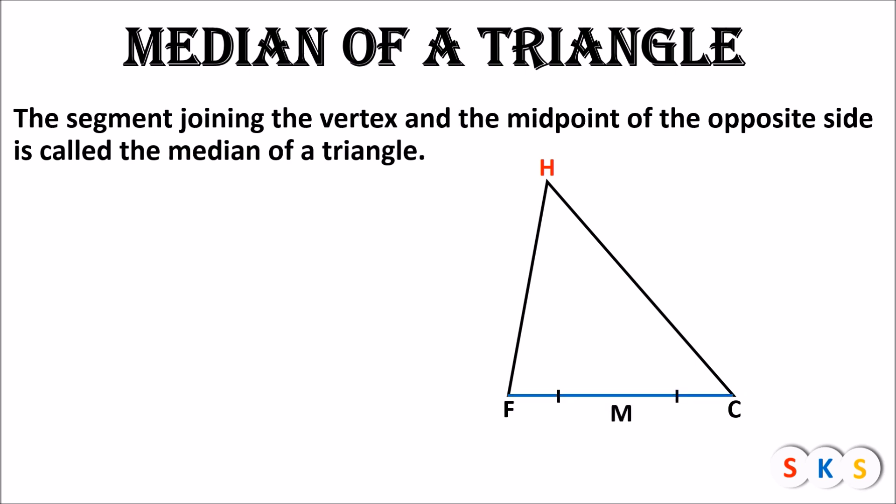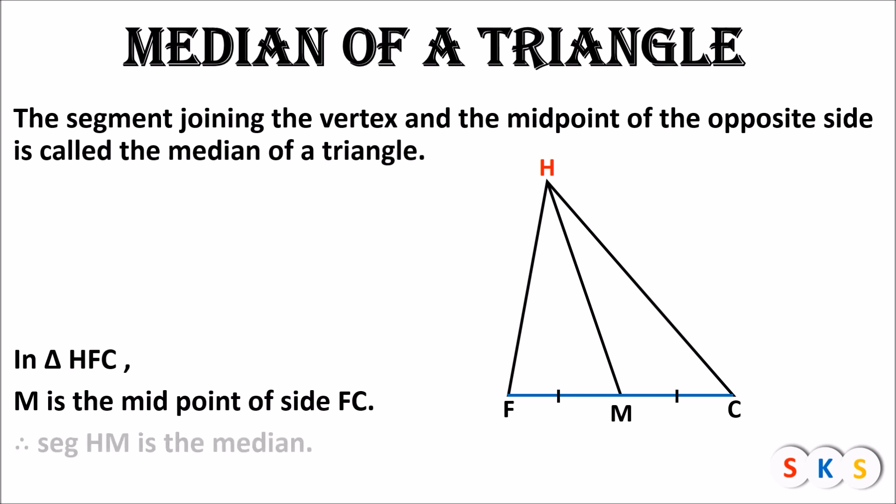M is the midpoint of the opposite side FC. Now we will join point M with vertex H — that is, we join vertex H with the midpoint of the opposite side FC. Seg HM is the median of triangle HFC. In triangle HFC, M is the midpoint of side FC; therefore, seg HM is the median of this triangle. So the median is a segment which joins a vertex of a triangle and the midpoint of its opposite side.